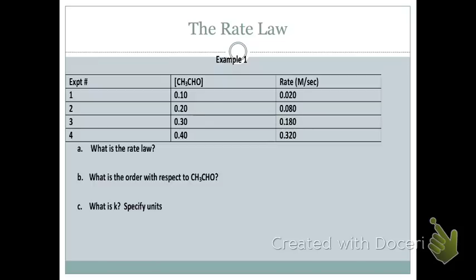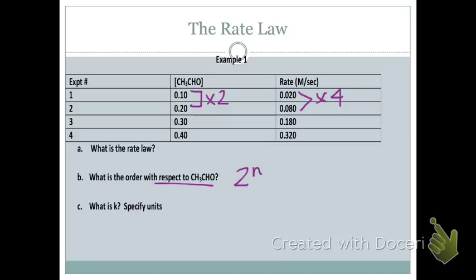Let's look at how to calculate the rate law. Our first example has only one reactant, which helps. Pick the experiments that make the math easiest — so I'll use experiment one and two, or experiment two and four. Looking at experiments one and two, I doubled the concentration, and the rate went up by four. If you double the concentration and the rate quadruples, then CH₃CHO is second order.